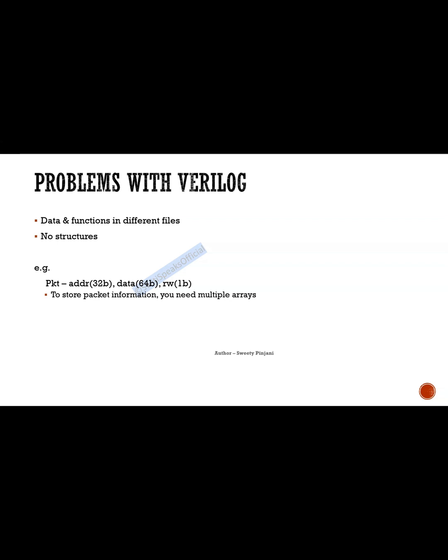In Verilog to store this packet information, you need multiple arrays. One array for address, one array for data, one array for read write. Because you don't have structure, so you can't club all these together. You need to declare separate arrays for each different variable of each different data type.